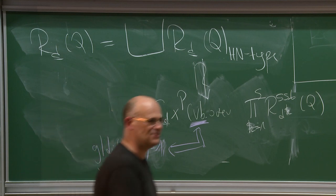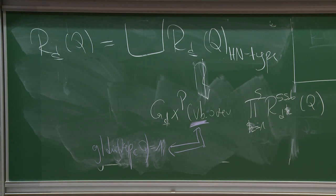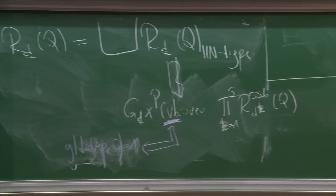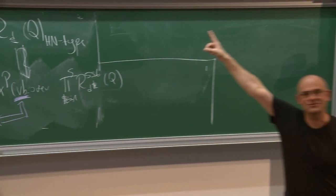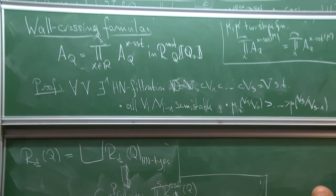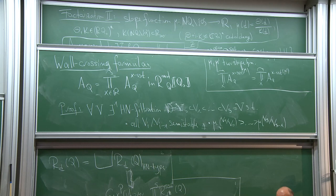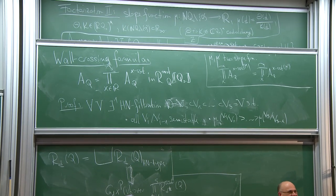That's basically enough for today. Next time we will start with this identity and explore these local contributions — the semi-stable generating functions — and relate them to moduli spaces of semi-stable representations, and then finally define the DT invariants.